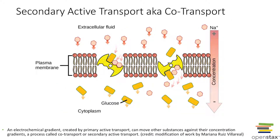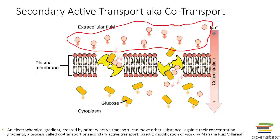Secondary active transport, or co-transport, is based upon this electrochemical gradient set up by primary active transport. We pushed all those sodiums against their concentration gradient out into the extracellular fluid. Now, just like simple diffusion, those sodiums want to follow their gradient — so with secondary active transport, sodium follows its concentration gradient from high to low.